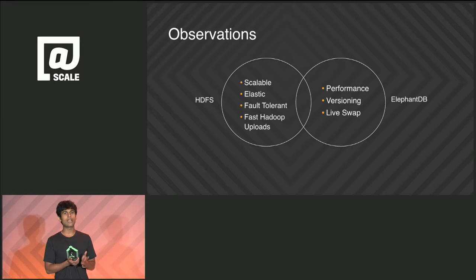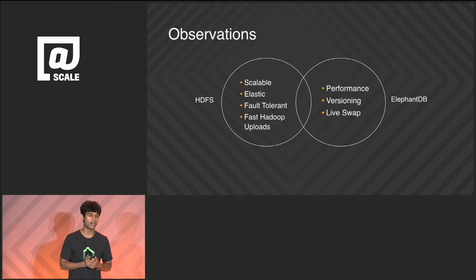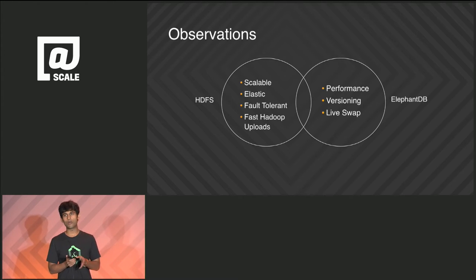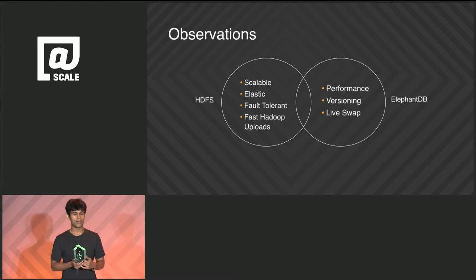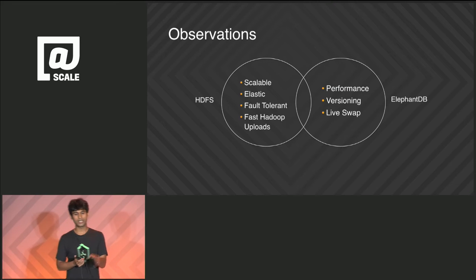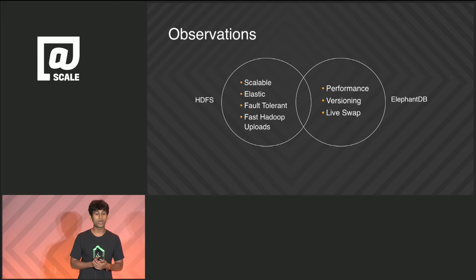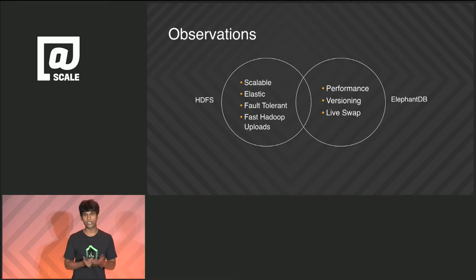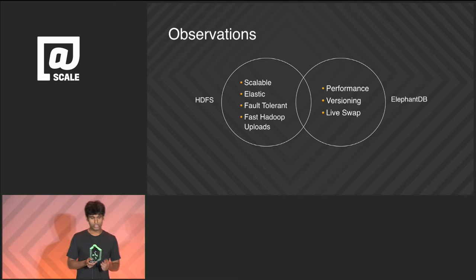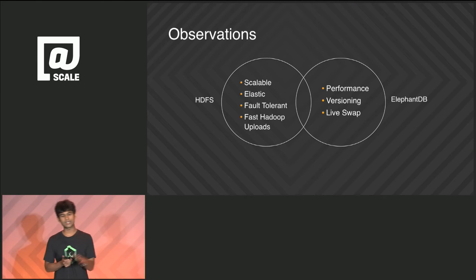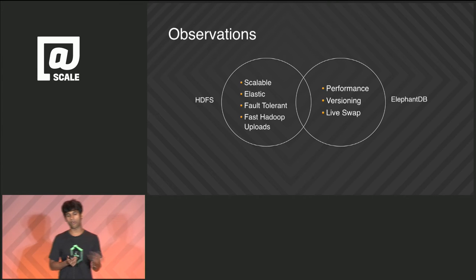We looked at these different solutions and the pros and cons of each. HDFS-backed systems like HBase were scalable, elastic, easy to add nodes, fault tolerant, and Hadoop could directly write data to HDFS — fast to get data onto the system. The ElephantDB-style architecture had nice properties: performance because data was served locally, versioning, live swap of versions, and cheap garbage collection without compactions. So we thought: should we build scalability and elasticity into that other architecture, or go with HDFS and squeeze out performance?